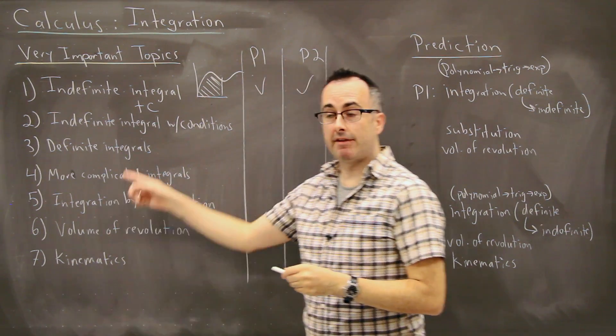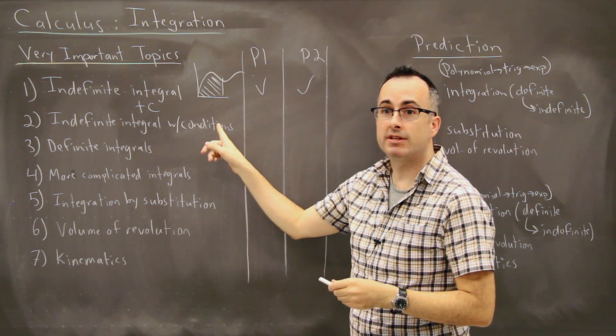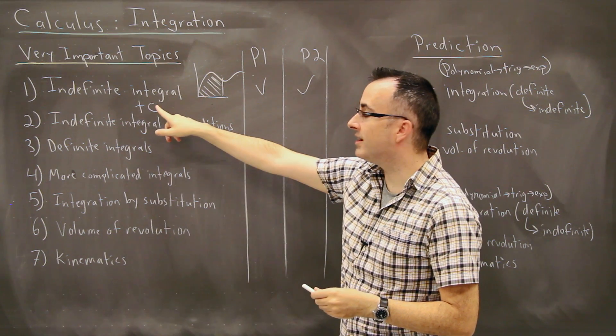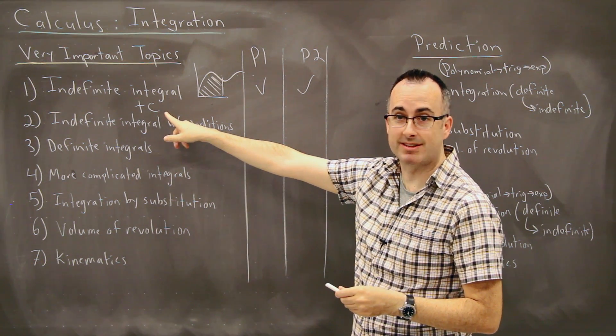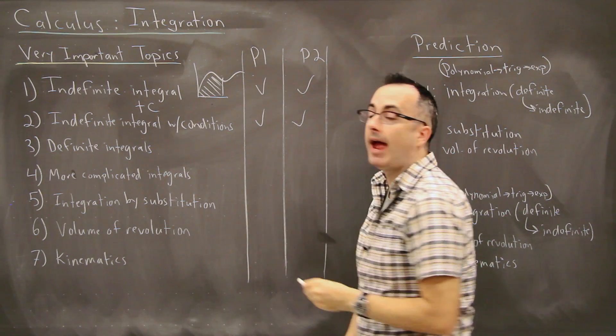And then we have definite integrals. These are ones just like these, except these ones have conditions. So these here are ones where you have enough conditions in order to determine what is the value of this plus C. So what is the value of this constant? And those show up commonly on paper one and paper two.